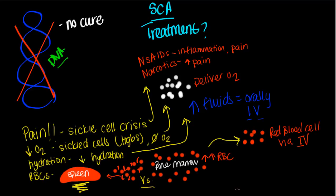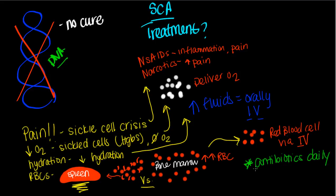Coming back to the spleen — this is an important concept. Our spleen contains about half of our immune cells. If we destroy our spleen because of an occlusion caused by sickled cells, we damage our immune system. Taking antibiotics prophylactically — daily — is very important, because just like we can experience an infarct in any microvascular system, we can experience one in the spleen. If that happens, we lose the spleen and with it a huge part of our immune defense. Antibiotics daily is certainly recommended for someone with sickle cell anemia.